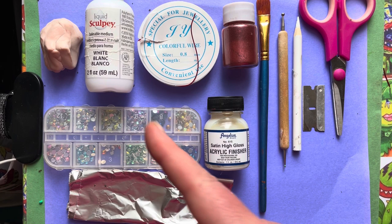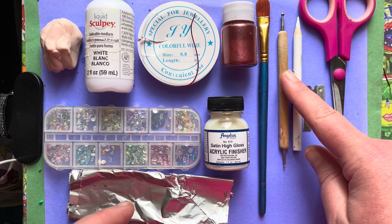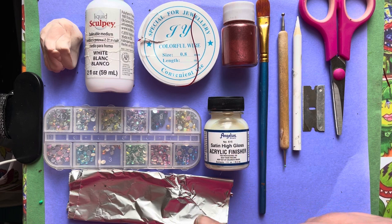So for this project we will need polymer clay, liquid Sculpey, 0.8 millimeter wire, mica powder, a brush, dotting tool, wax pencil, blade, scissors, high gloss finish or sealer, rhinestones, and aluminum foil.